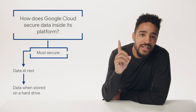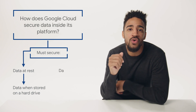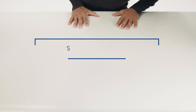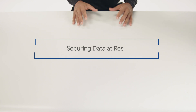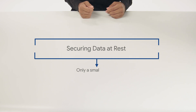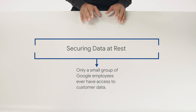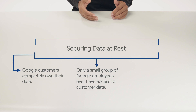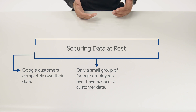For one, to keep data private and secure, Google logically isolates each customer's data from that of other customers and users, even when it's stored on the same physical server. As Google is managing this data for its Cloud clients, it protects them from employees abusing their access. Only a small group of Google employees ever have access to customer data. Additionally, Google doesn't scan customer data for advertisements or sell it to third parties.